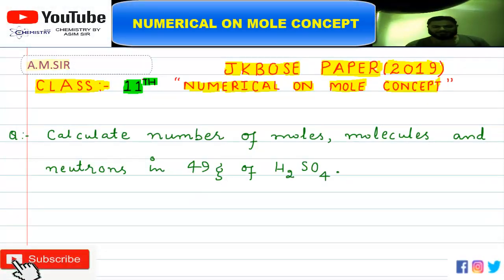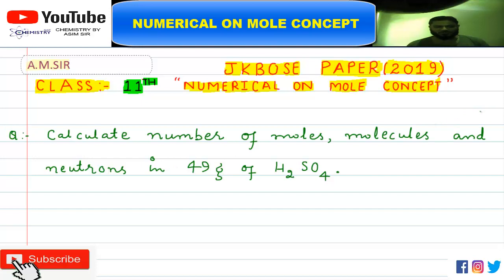Welcome back, dear friends and students. In today's video lecture, we are discussing an important numerical that was asked in JK Moore's course 19 paper. The numerical was based on the mole concept. The question was: calculate the number of moles, molecules, and neutrons in 49 grams of sulfuric acid.